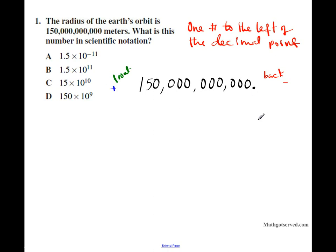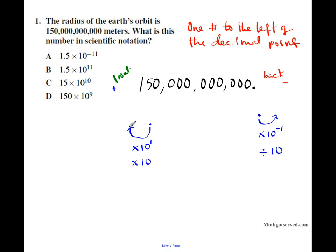Any decimal point you move backwards, you're going to be multiplying by ten to the negative one, because this is the same thing as dividing by ten. Any time you divide by ten, the decimal point moves to the back one place. Any decimal point you move to the front — to the left — you're going to be multiplying by ten to the one. Whenever you move a decimal point to the front, you're multiplying by ten. You have to add ten to the one to compensate for that move.